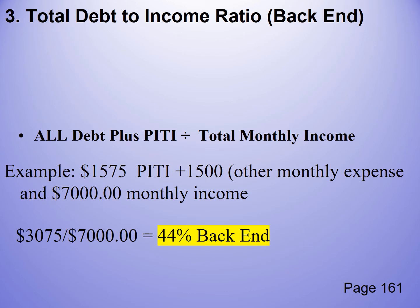The back end ratio, which is the total debt-to-income ratio, is all monthly debt plus PITI divided by monthly income. So if your PITI is $1,575 and other monthly debt expenses are $1,500, we combine those for $3,075 and divide by $7,000 — that's our back end ratio. So: all debt plus PITI.